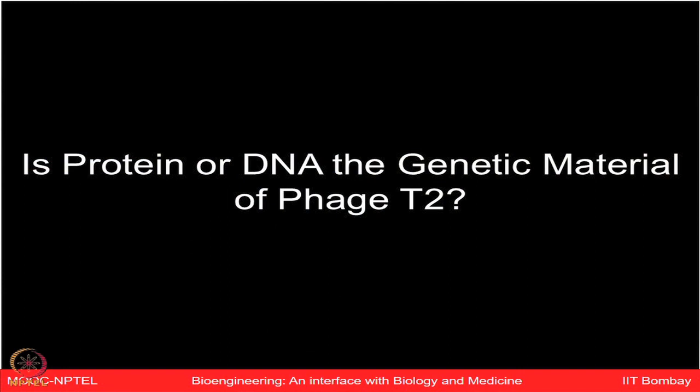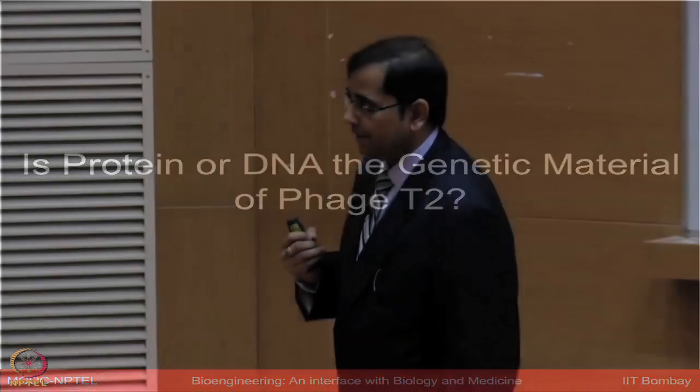Now let us come to the next question: Is protein or DNA the genetic material? We have been saying all genetics is based on DNA, that DNA is going to transfer from one generation to the next. But why by default do we assume that DNA is the only thing which is going to have those properties? It might be even protein may have the same property. Someone had to do this experiment first time.